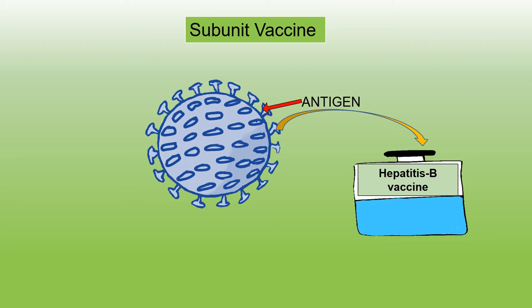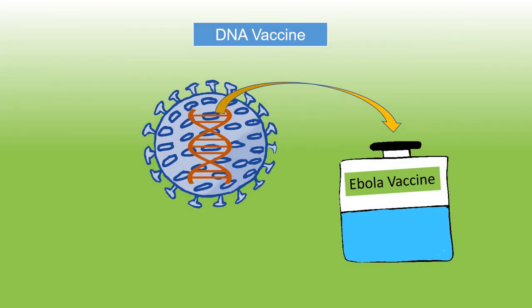It is not always possible to separate antigens from a pathogen. DNA vaccines are a new type of vaccine being developed by scientists. Genes required for the production of an antigen in pathogens are separated from them and used in DNA vaccines. When these genes enter the body through vaccination, they trigger the formation of antigens by the body cells, which causes the immune system to produce antibodies.